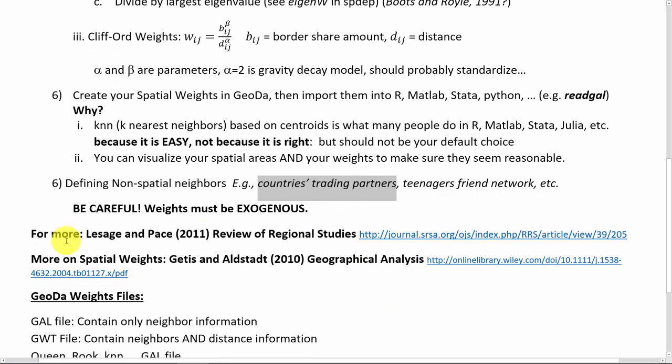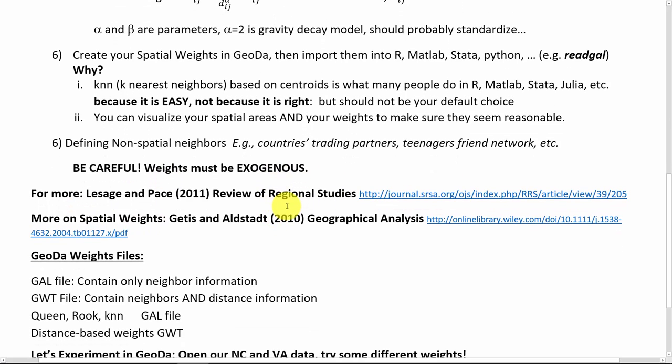Now, a source on that is LeSage and Pace 2011 in the Review of Regional Studies. Again, this is an open access article. It goes into more detail about why that's important. Another thing in this paper they talk about that you might be interested in is what if you had two or more spatial relationships or weights or neighbors relationships you wanted to model. How does that work out? What are some things that you ought to think about?